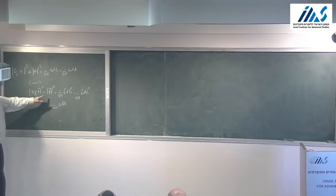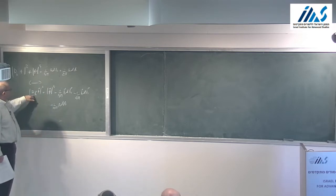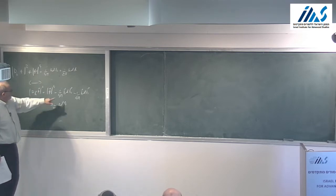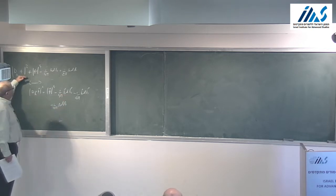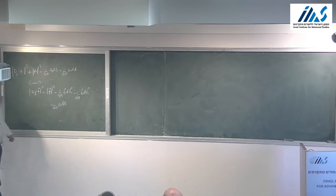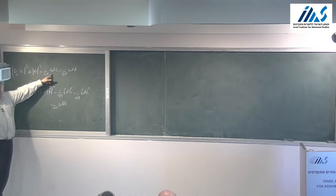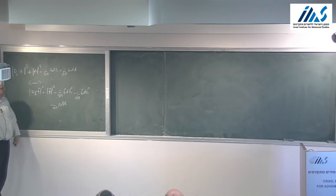This theory on the left is the Wilson-Fisher theory coupled to a gauge field B with a Chern-Simons term level 1. This theory is the same Wilson-Fisher theory coupled to a gauge field B-hat with a U(1) level minus 1. So this theory looks like the time reversal image of that, which is a bit surprising because this theory is not time reversal invariant — it has a Chern-Simons term — and yet it's dual to the theory with the opposite Chern-Simons term.